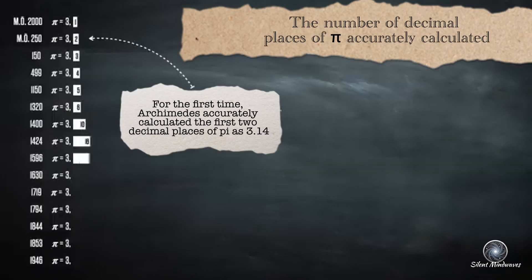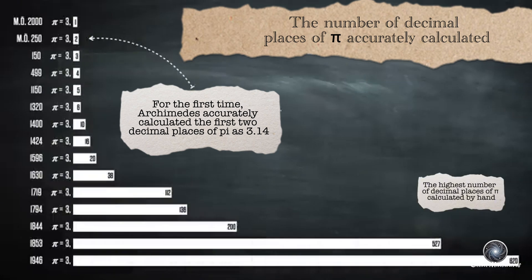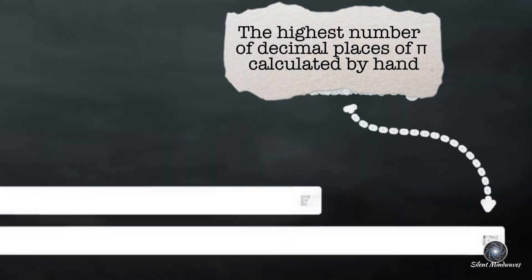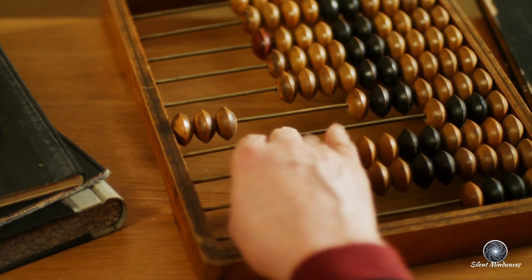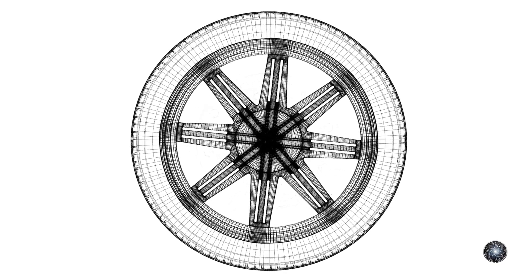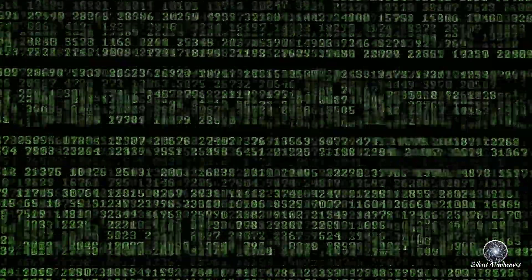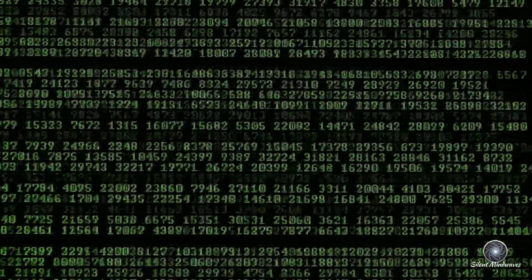From Archimedes to today, mathematicians have calculated pi's digits after the decimal point. By hand, they managed to determine hundreds of digits accurately. In fact, in 1946, the record for manual calculation was set at 620 digits. For thousands of years, we relied on manual calculations and simple tools like wheels. But in the past 70 to 80 years, computers have completely transformed this process.